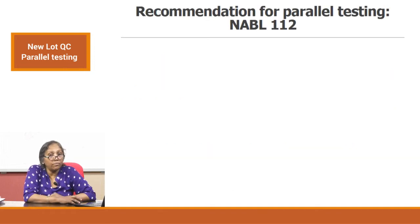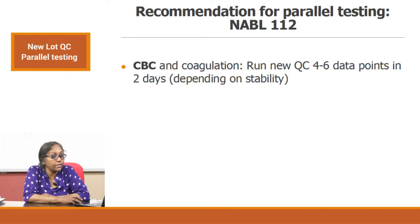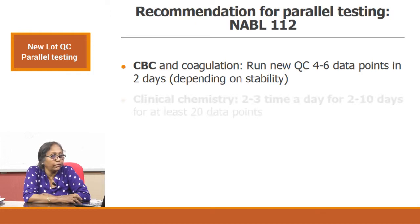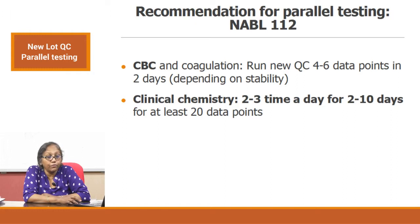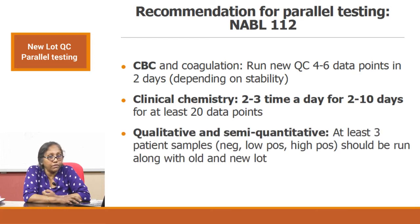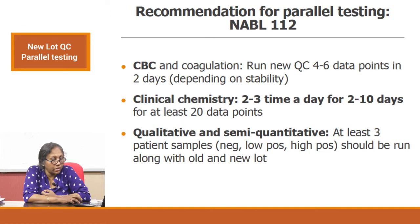There are recommendations for parallel testing in NABL 112, especially for coagulation and CBC: run new QC with 4 to 6 data points in 2 days depending on stability. For clinical chemistries: 2 to 3 times a day for 2 to 10 days for at least 20 data points. For qualitative and semi-quantitative tests: at least 3 patient samples — negative, low positive, high positive — should be run along with old and new lot. For CBC, coagulation, and clinical chemistry there are very clear directions to follow.